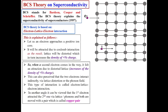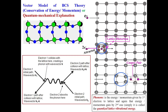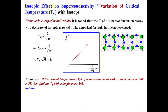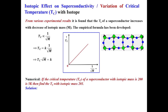BCS theory, based on electron-lattice-electron interaction, has been discussed in detail with animation. I suggest you go through this video and make notes for your exam. In the next class we are going to discuss the isotope effect on superconductivity, or variation of critical temperature with isotope. Thank you so much for watching this video.